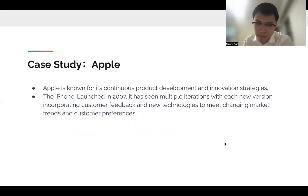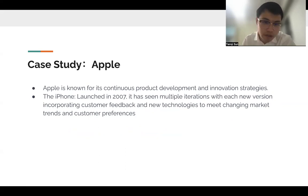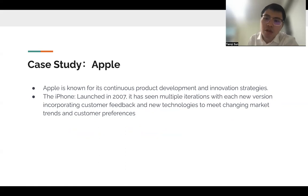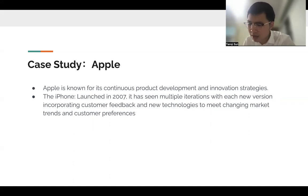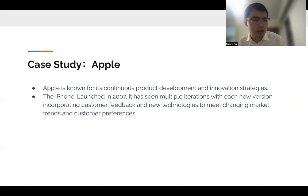An important case study for continuous product development is the iPhone, which was launched in 2007. It has had multiple iterations, with each new version incorporating customer feedback and new technologies to meet the changing market. It also opened up new needs, for example the iPad, iPods, AirPods, and so on. Every generation gets better, and the innovation and branding are fantastic. We don't technically need to change our phone every year, but people still do because there's always a new feature they want.